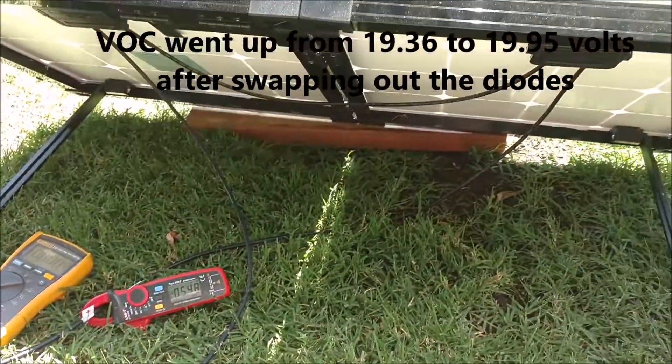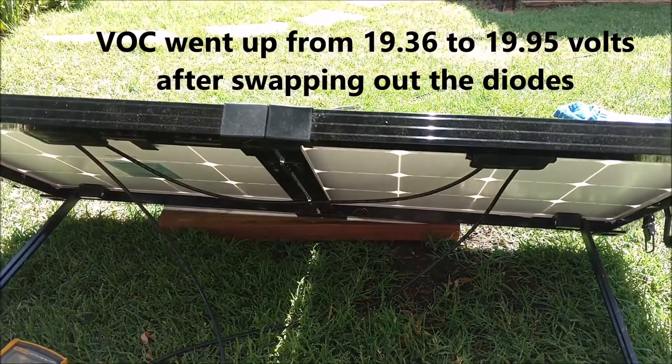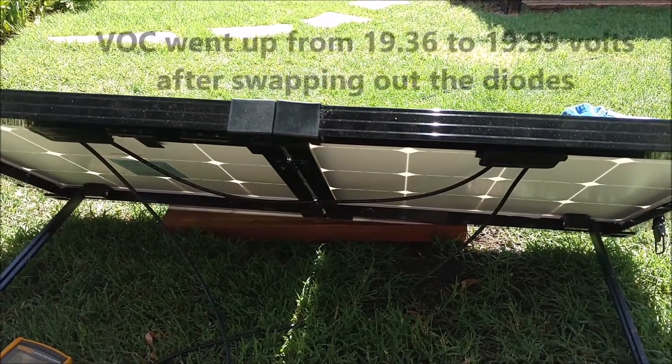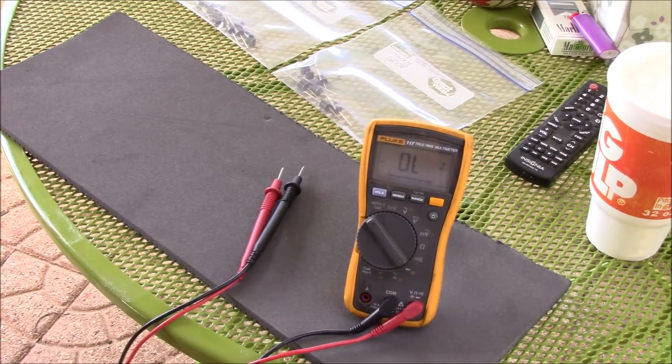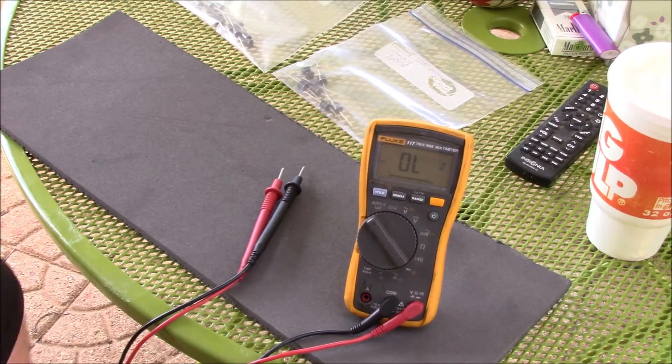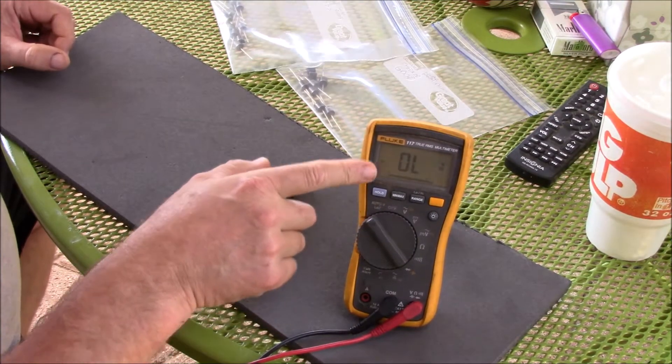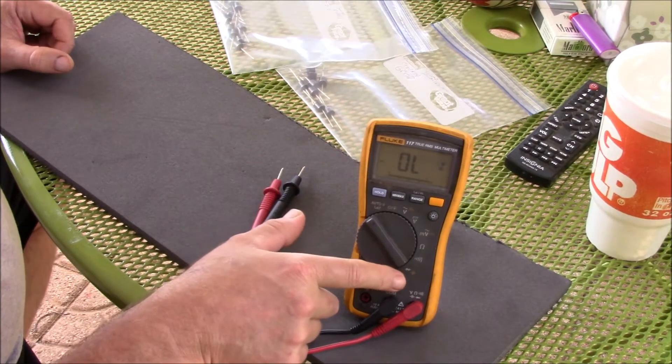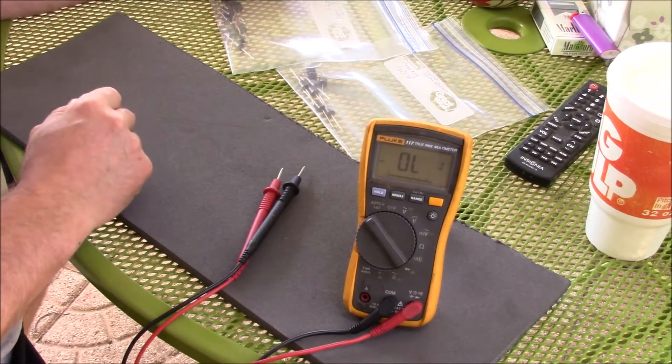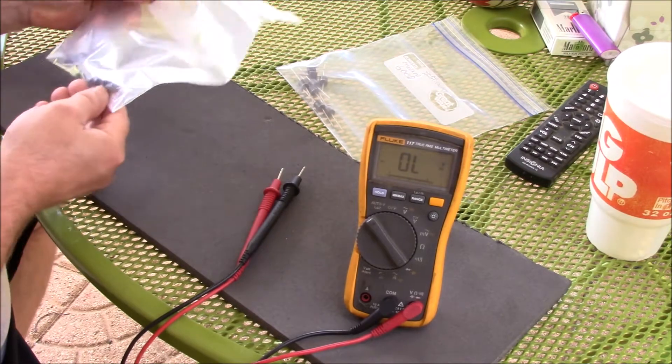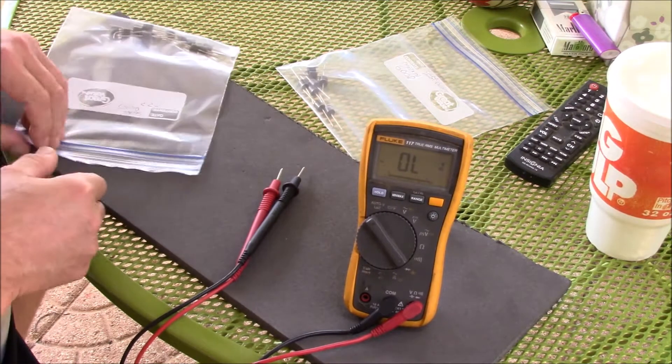You know, if something doesn't look right or feel right, it probably isn't right. So I'm really glad I swapped out these diodes. I'm using my Fluke 117 True RMS multimeter in diode checker mode, and if I'm doing this wrong, please let me know.